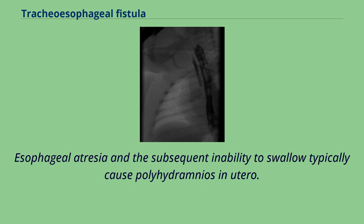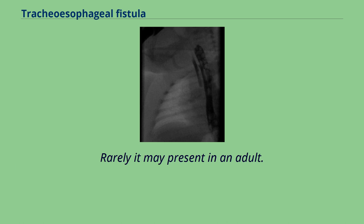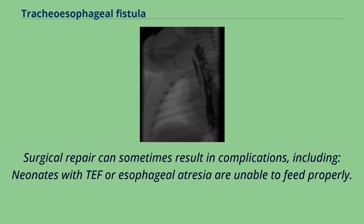Esophageal atresia and the subsequent inability to swallow typically cause polyhydramnios in utero. Rarely, it may present in an adult. Surgical repair can sometimes result in complications, including neonates with TEF or esophageal atresia being unable to feed properly.